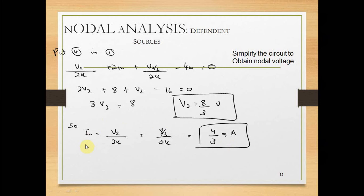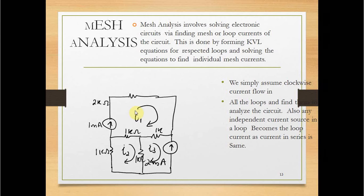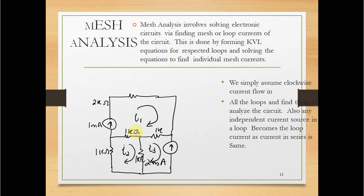We have calculated I0 equals 4/3 milliampere. Next, we move to mesh analysis. In previous examples we learned how to apply Kirchhoff's current law and super node analysis. Mesh analysis involves solving the electronic circuit by finding the mesh or loop currents, done by forming KVL equations for each loop. We assume clockwise current flow for all loops, with 3 loops available.